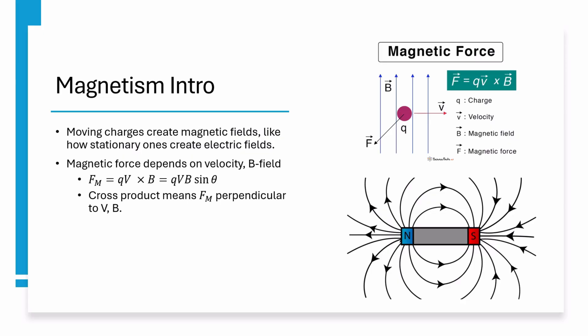Magnetic force is the cross product of charge times velocity and magnetic or B-field. Taking a vector cross product isn't testable in the AP, but you can use the equation qvb sinθ to find the magnitude of magnetic force.